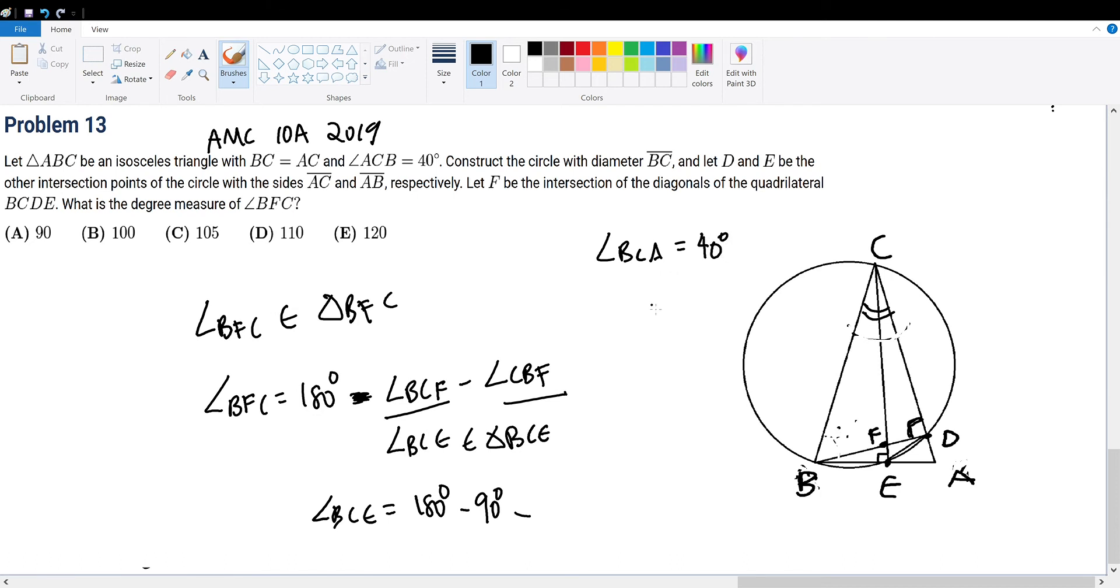We know that angle ACB is 40 degrees. And since triangle BCA is an isosceles triangle, what is angle CBA? Well CBA will be equal to 180 degrees minus 40 divided by 2 which is 70 degrees. So we subtract 70 degrees which gives us 20 degrees. So angle BCE will be 20 degrees. So we have one part down.